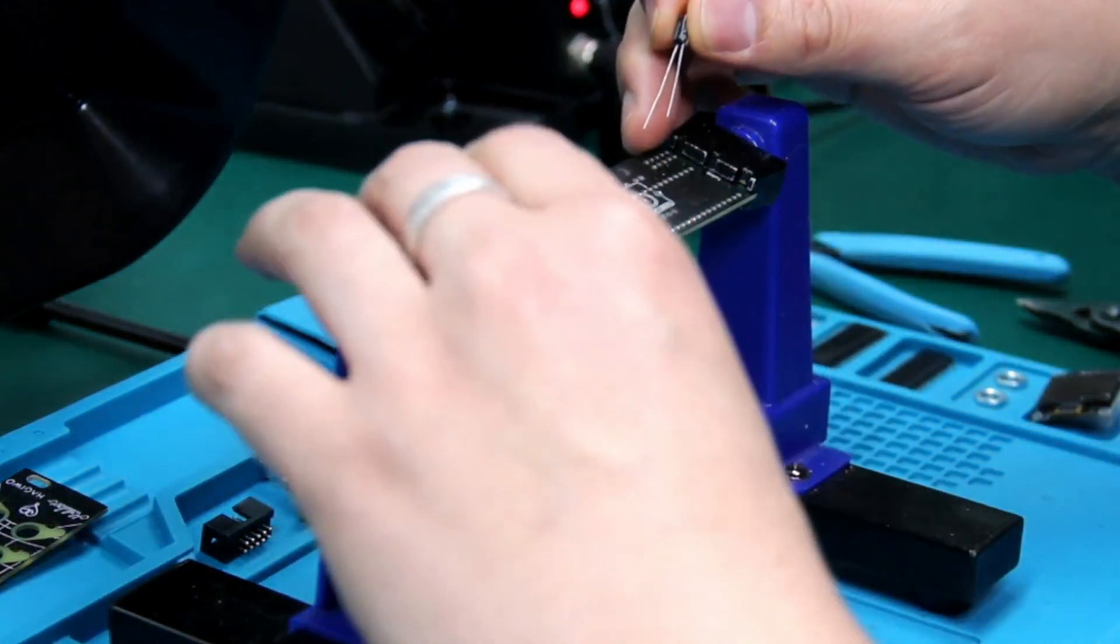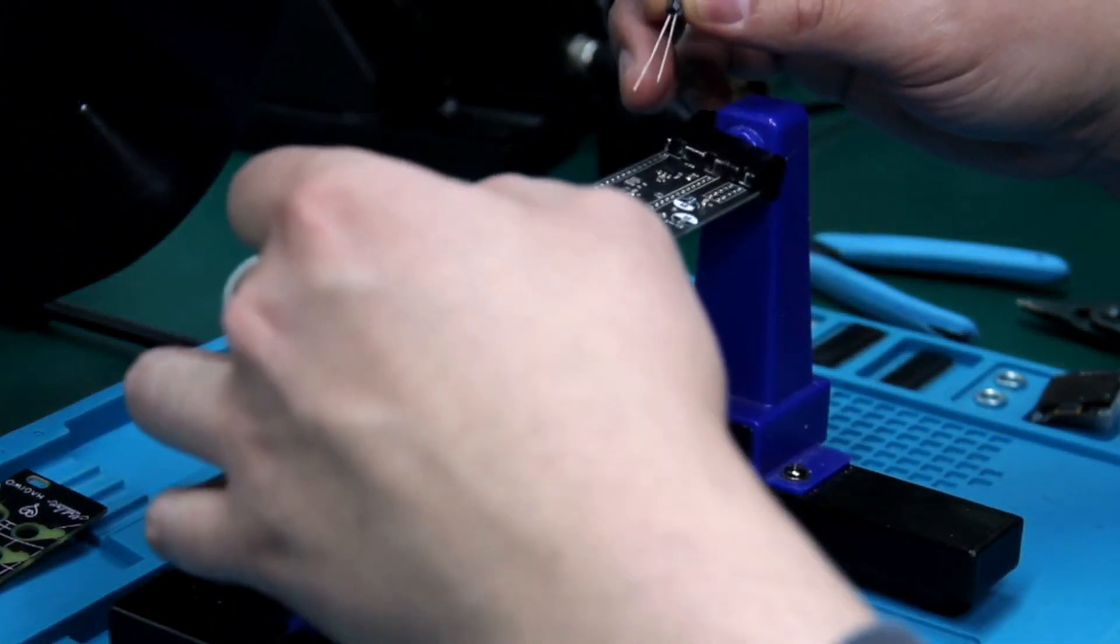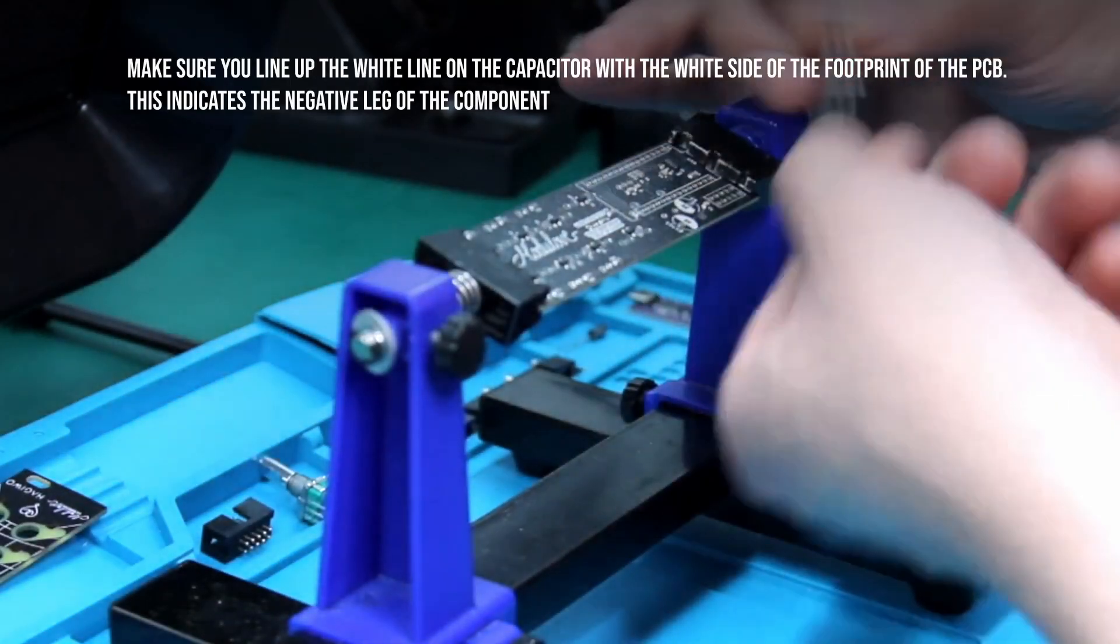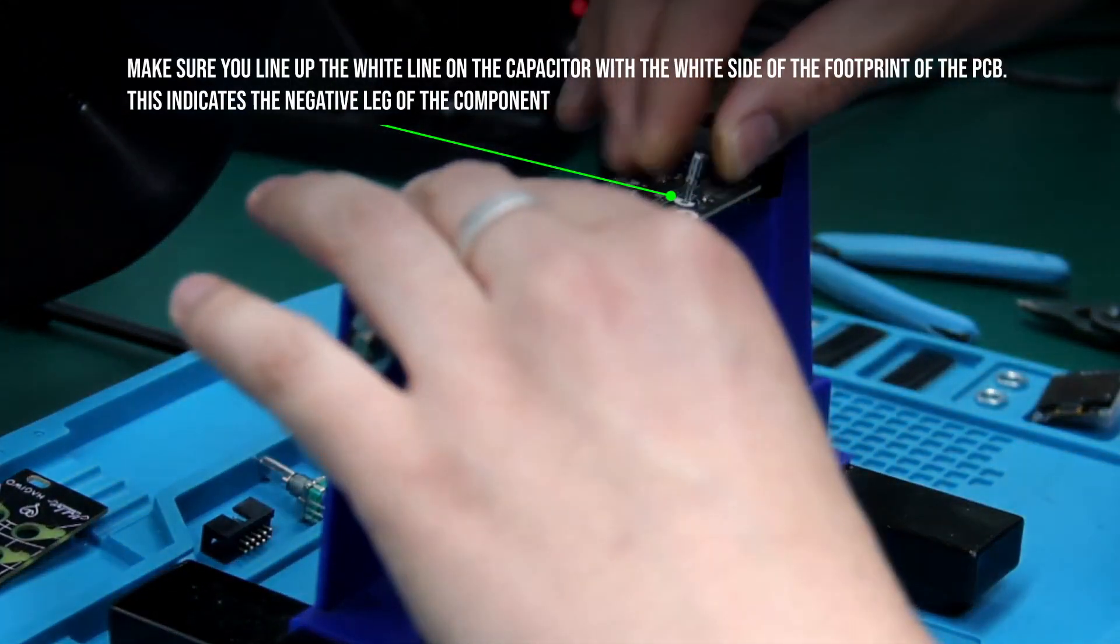Pay close attention to the white line marking the negative side of the capacitor and line it up with the footprint on the PCB.